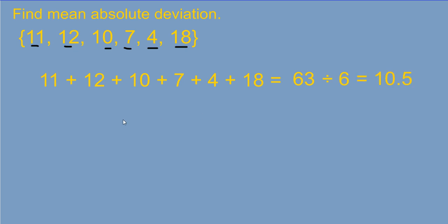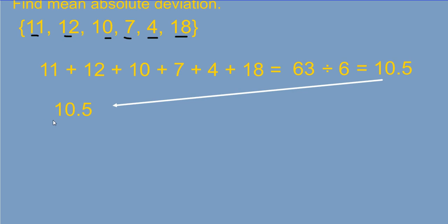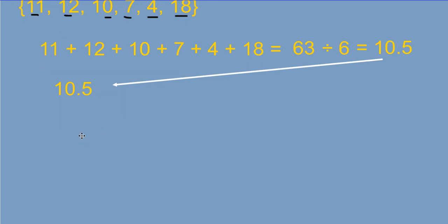It just so happens, and this isn't every time, but in this case, our mean is exactly the same as our median was from the previous problem. So when we divide that mean, we get 10.5. The next thing we want to do is we want to take this mean.